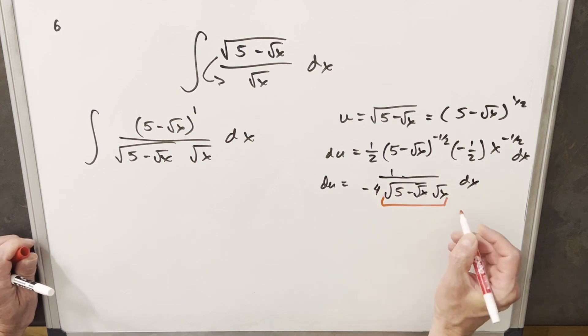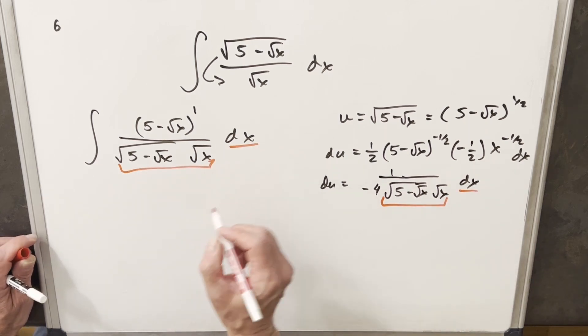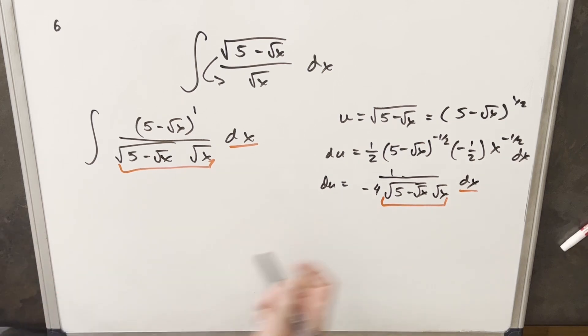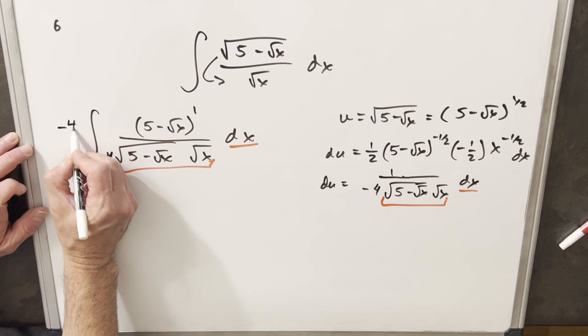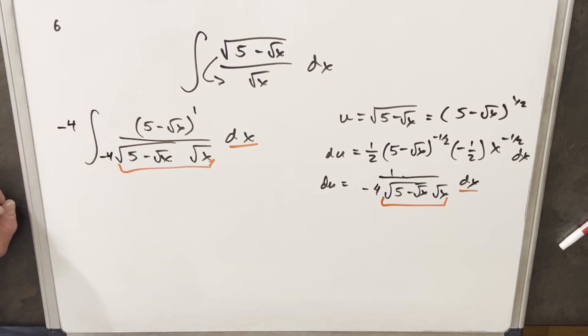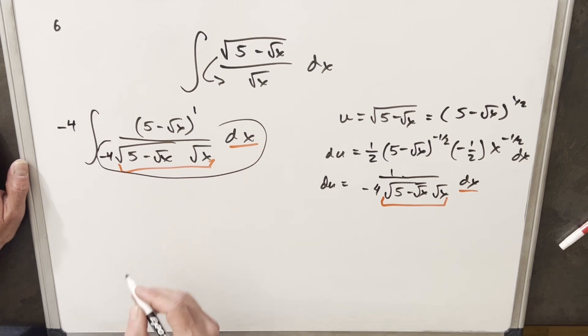And you'll notice this now with the dx is actually the same thing that we have right here. I just want that minus four. What I'm going to do is create this minus four right here. And so that I don't change it, we'll multiply minus four in the numerator. And then now what we have is we actually have our full du right here.